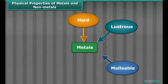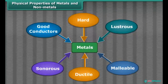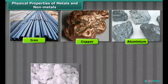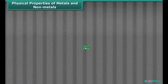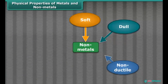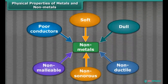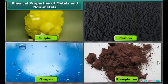So friends, by these properties we can say that metals are hard, lustrous, malleable, ductile, sonorous, and good conductors of heat and electricity. Iron, copper, aluminium, calcium, magnesium, etc. are examples of metals. Non-metals like coal and sulfur are soft, dull, non-ductile, non-sonorous, non-malleable, and poor conductors of heat and electricity. Sulfur, carbon, oxygen, phosphorus, etc. are examples of non-metals.